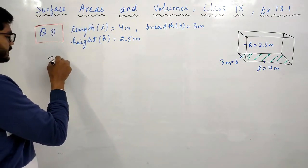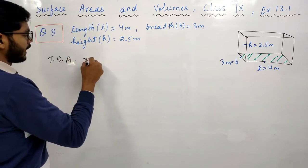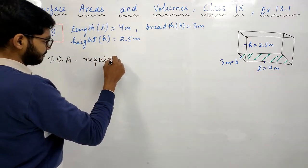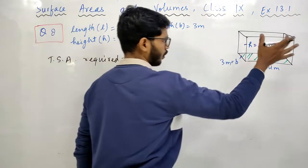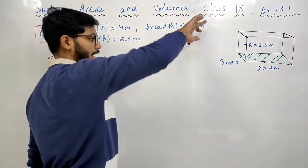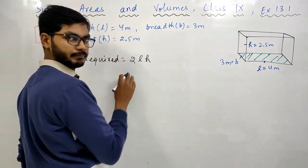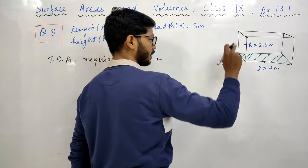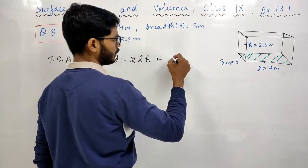Total surface area required: You need to calculate the front wall, which is L into H, and the back side as well, so two. Plus, you need to cover the sides too, so B into H, and multiply by two here as well.